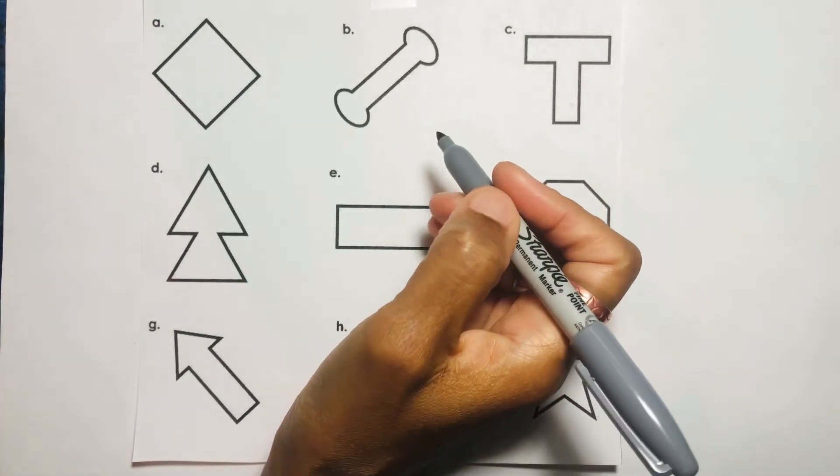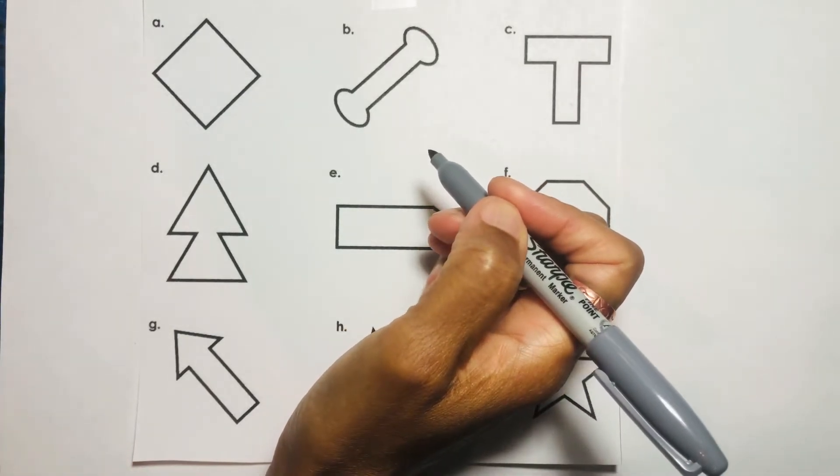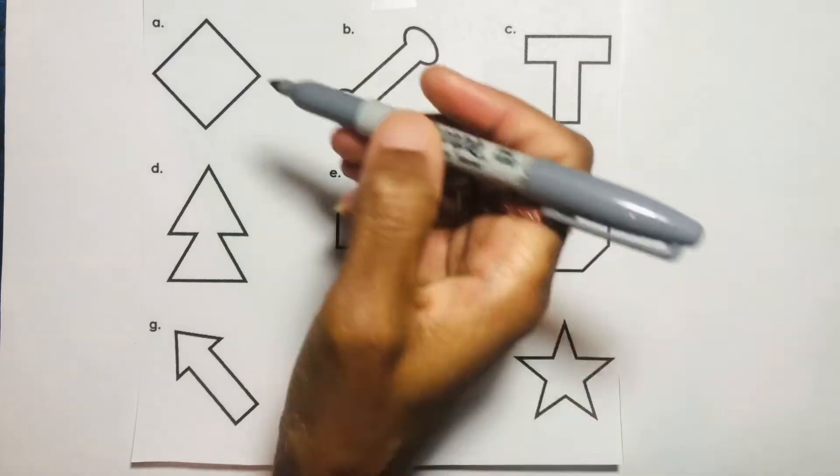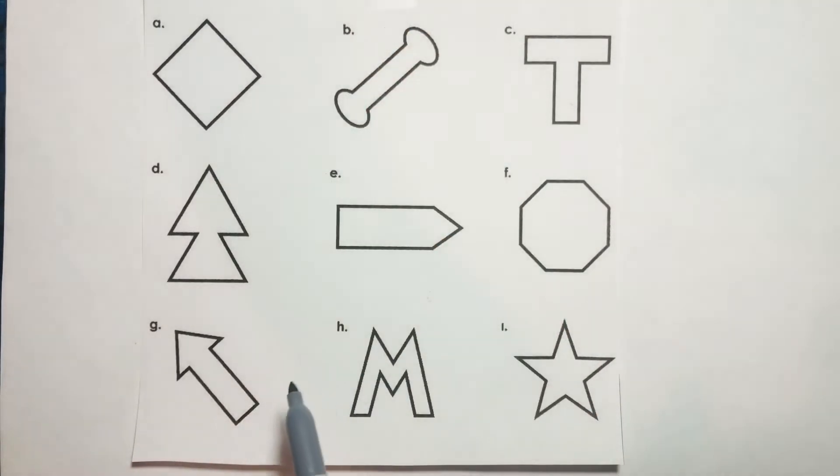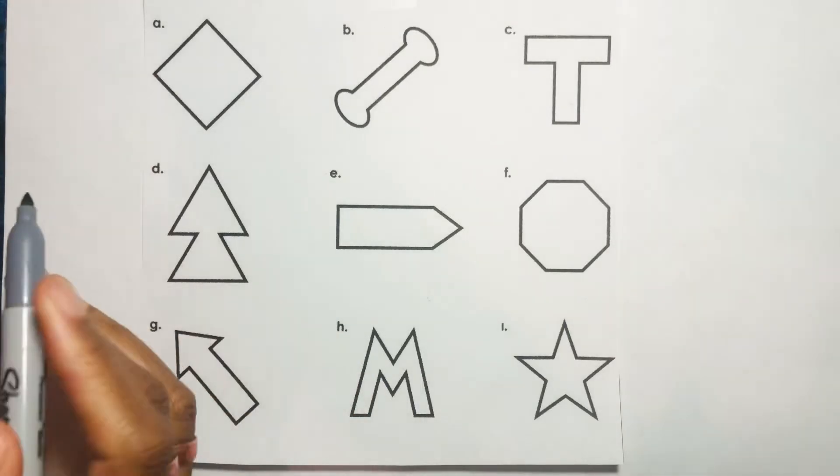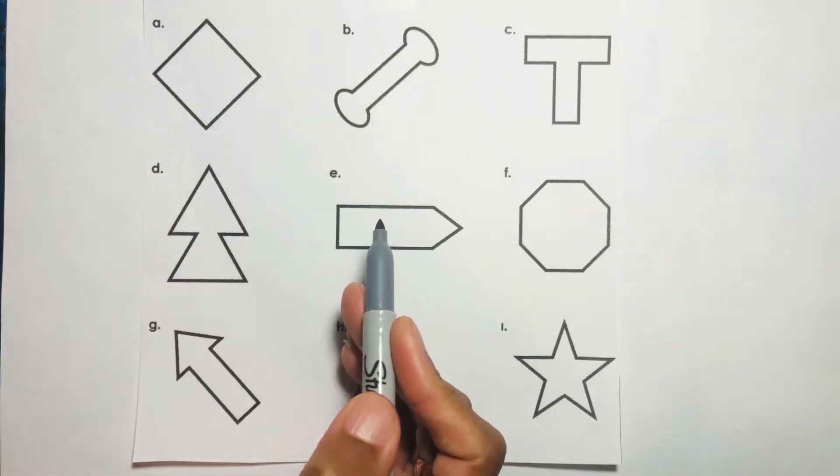So symmetry is all about proportion and balance. In other words, if I was to draw a line of symmetry on any one of these images and the other half is the same as the second half, then that is symmetrical.